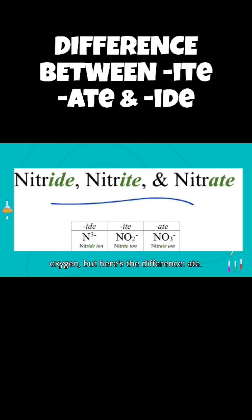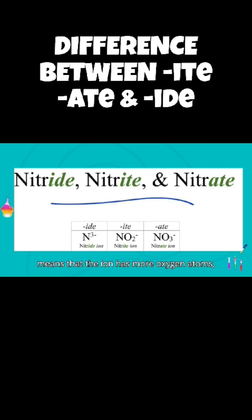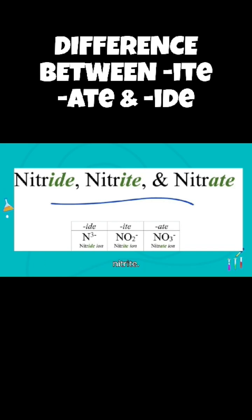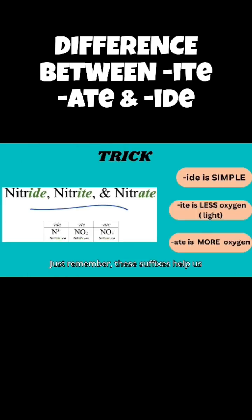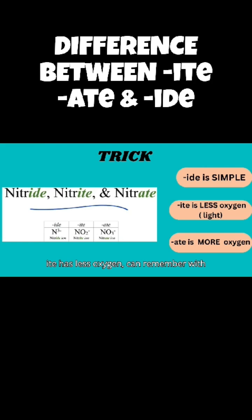Now, -ate and -ite are for polyatomic ions. Both -ate and -ite involve oxygen, but here's the difference: -ate means the ion has more oxygen atoms, and -ite means it has fewer. See how nitrate has one more oxygen atom than nitrite. Just remember: -ite is simpler, -ite has less oxygen — you can remember it with the word 'light' — and -ate has more.